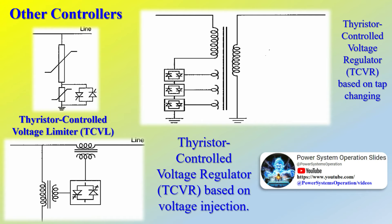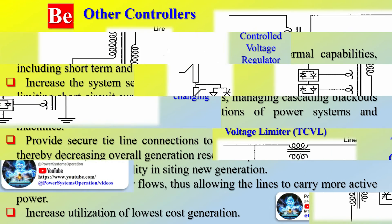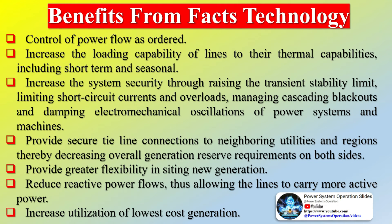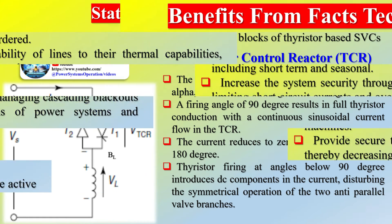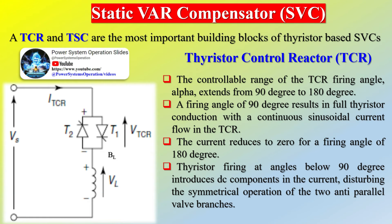Controllers with gate turn-off devices are based on DC-to-AC converters and exchange active and reactive power with AC lines, which requires an energy storage device. Energy storage systems are needed when active power is involved in the power flow; a controller with storage is more effective for controlling system dynamics. A converter-based controller can be designed with high pulse order or pulse width modulation to reduce low-order harmonic generation to a very low level, and a converter can also be designed to generate the correct waveform to act as an active filter.